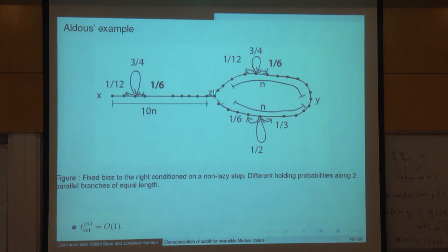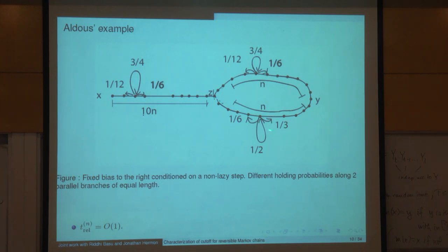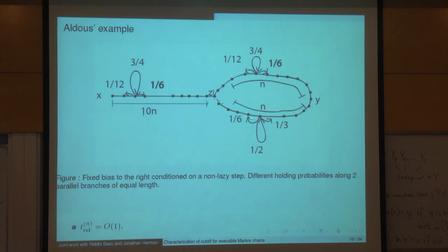When you reach a certain point, you either travel on an upper part or on a lower part, both with a drift to the right — but the drift is stronger on the bottom (probability 1/6) than at the top (probability 1/12). If you go on the bottom, you'll reach the far right in another 6N steps; if you go on the top, you'll reach it in about 12N additional steps.